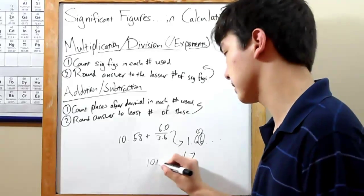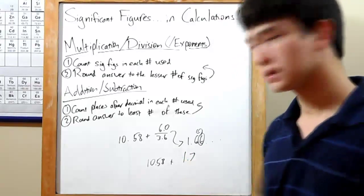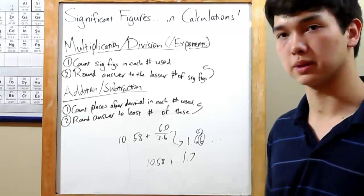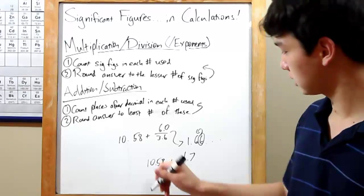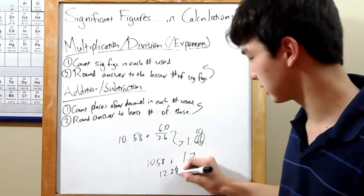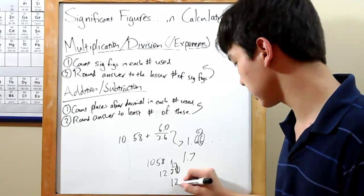Check the number of significant figures at the end of each of your steps. You're left with 10.58 plus 1.7. That gives you 12.28. Again, check your sig figs. Two places after the decimal, one place after the decimal. So round it, and you get 12.3. And that's all there is to it.